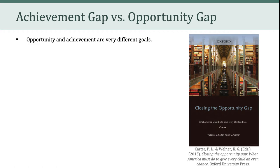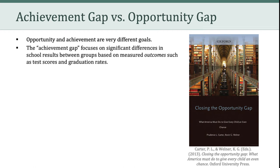Carter and Wellner write that opportunity and achievement are very different goals. On the one hand, the achievement gap focuses on significant differences in school results between groups based on measured outcomes such as test scores and graduation rates. The 2003 PISA results that we were just looking at, as well as the 2015 PISA results I shared, are examples of focusing on achievement gaps — significant differences between different groups in terms of outcomes.